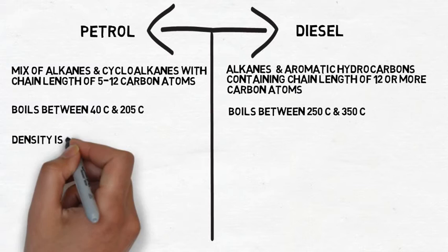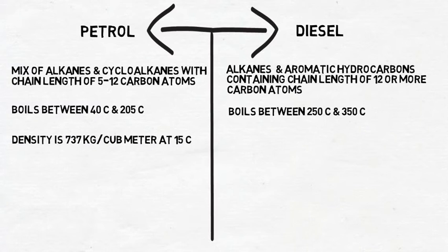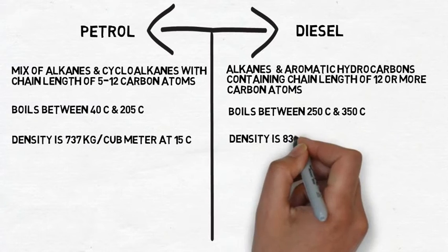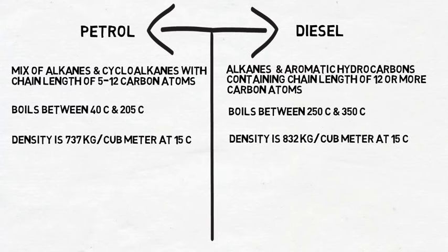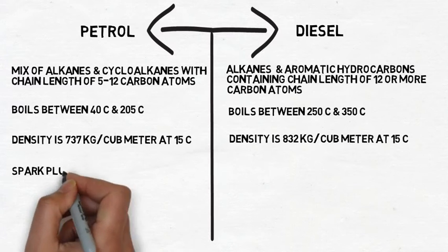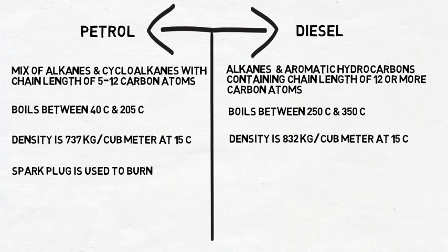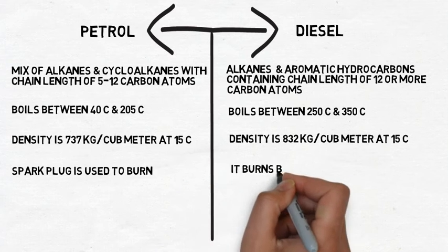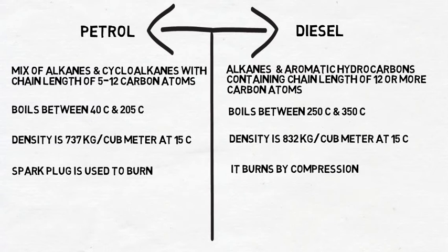Density of petrol is 737 kg per cubic meter while density of diesel is 832 kg per cubic meter — diesel is heavier than petrol. For burning, a spark plug is used in a petrol engine, while in a diesel engine, diesel is burnt by compression of air which gets heated up due to compression.